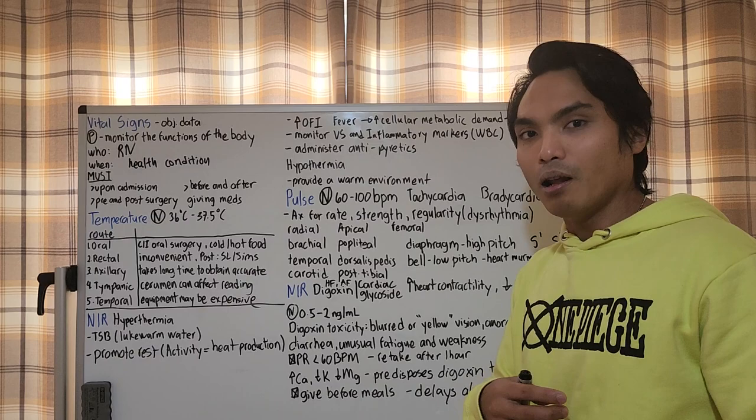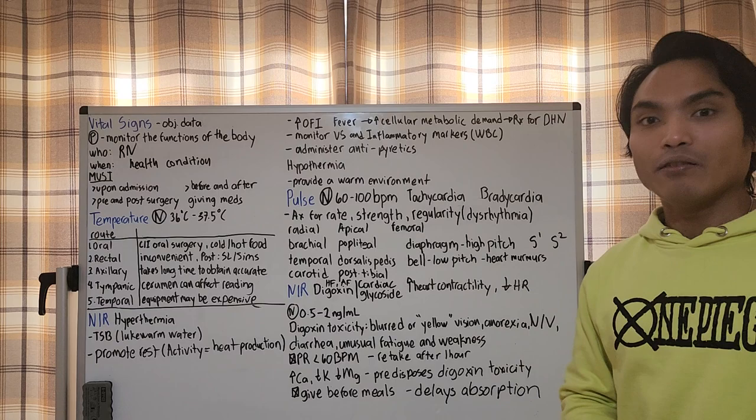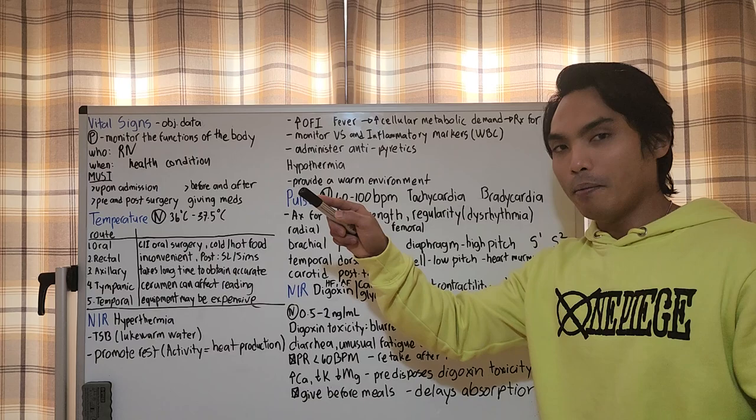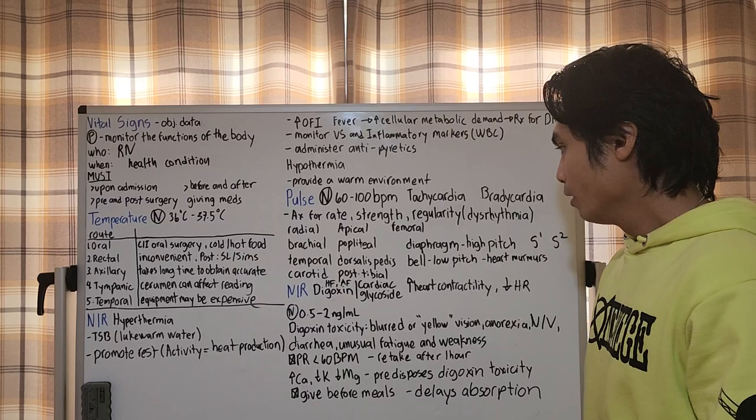How do we assess apical pulse, the point of maximal impulse? We use the stethoscope, which has two sides: the bell and the diaphragm. The diaphragm is used for high-pitched sounds like heart sounds and breathing sounds, to assess S1 and S2, the lub-dub. The bell is used for low-pitched sounds like heart murmurs, S4 and S3.